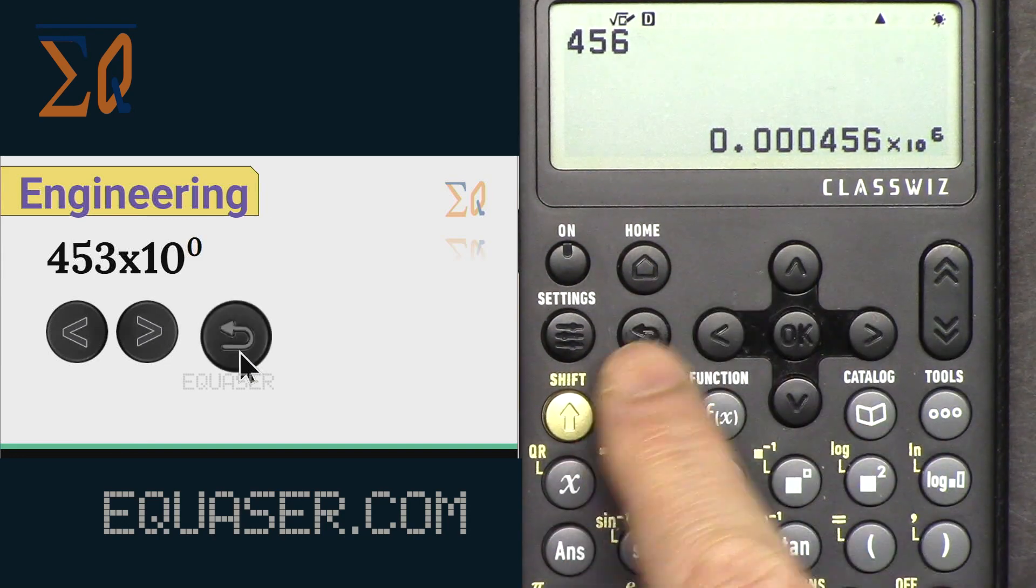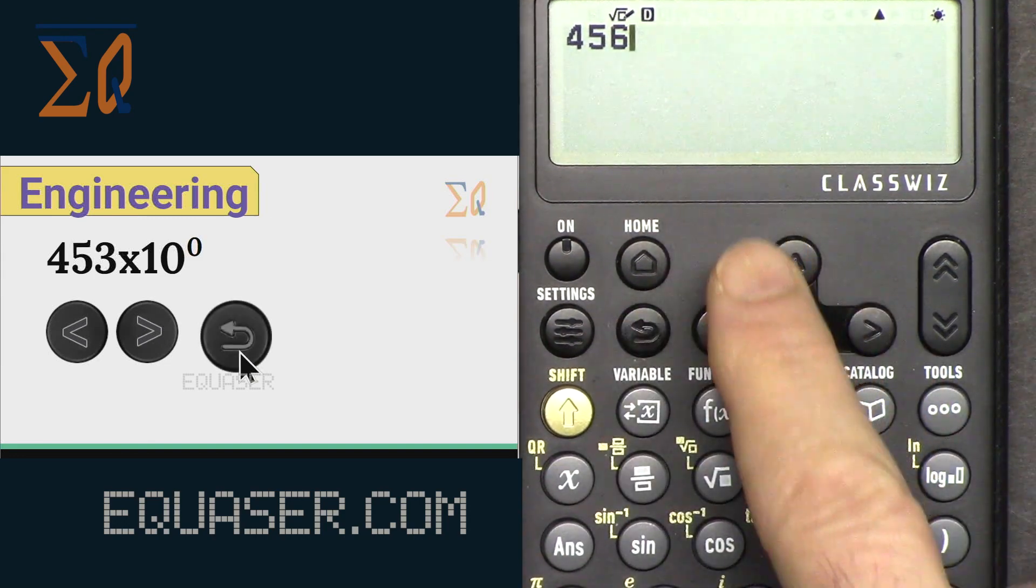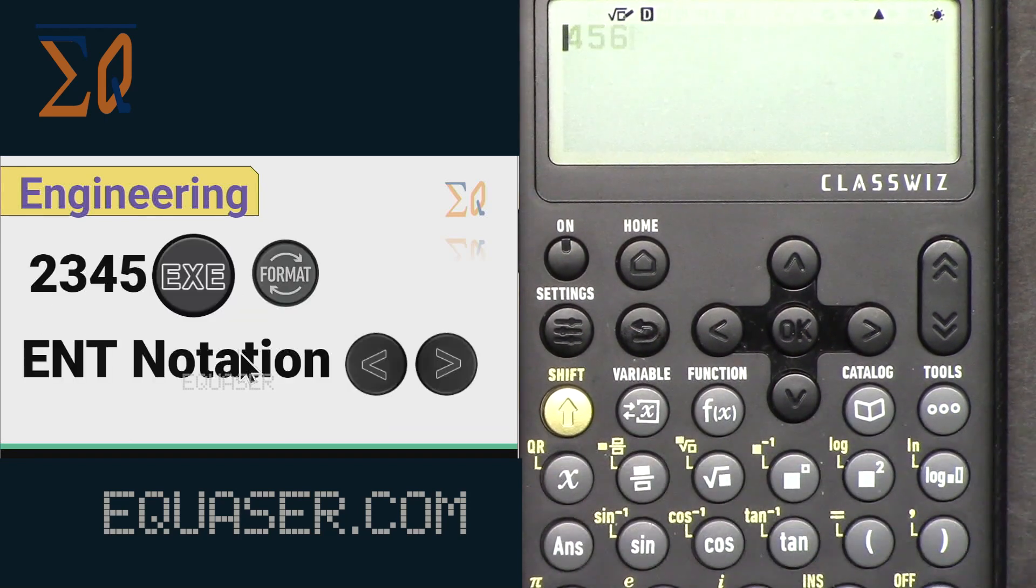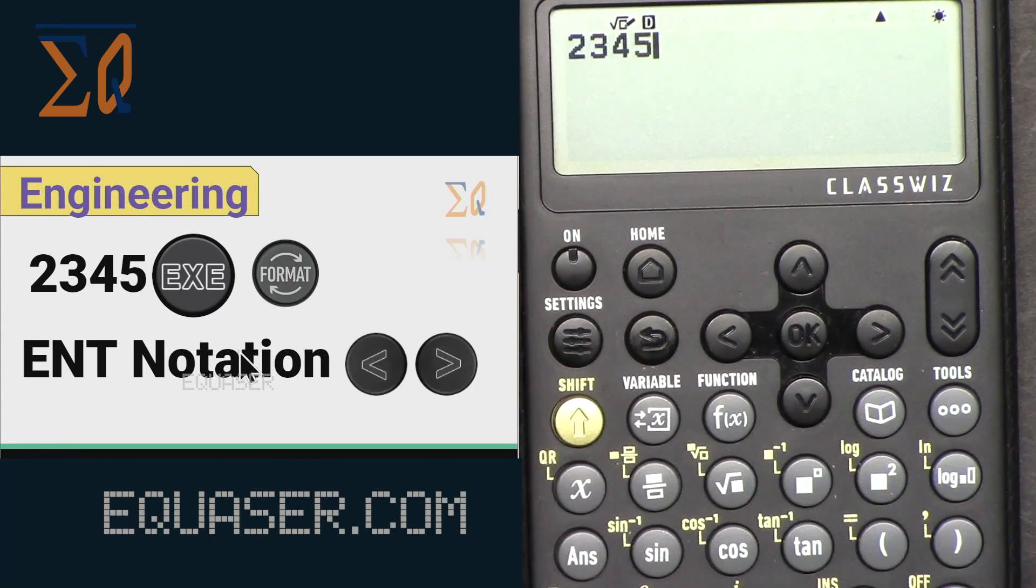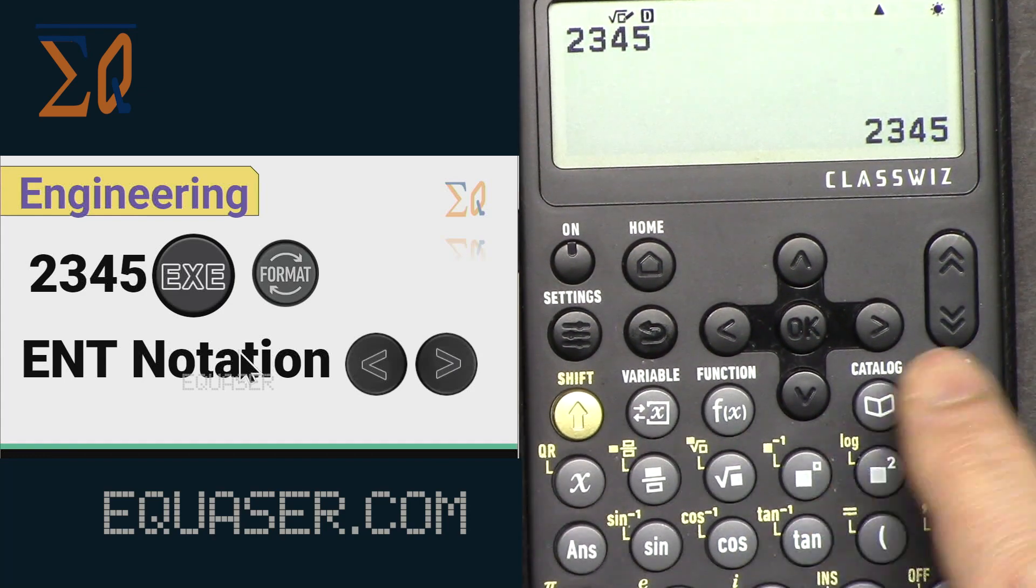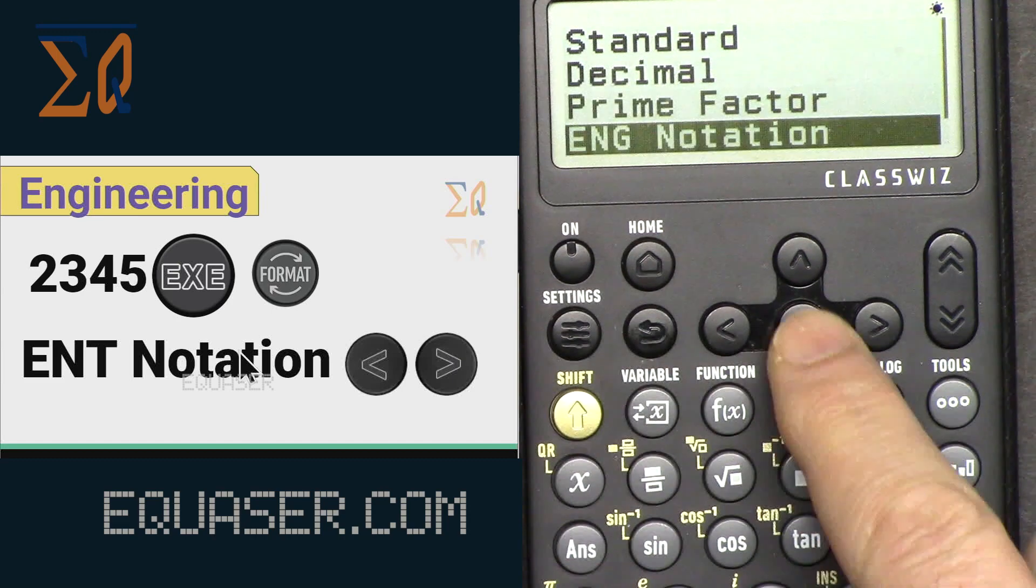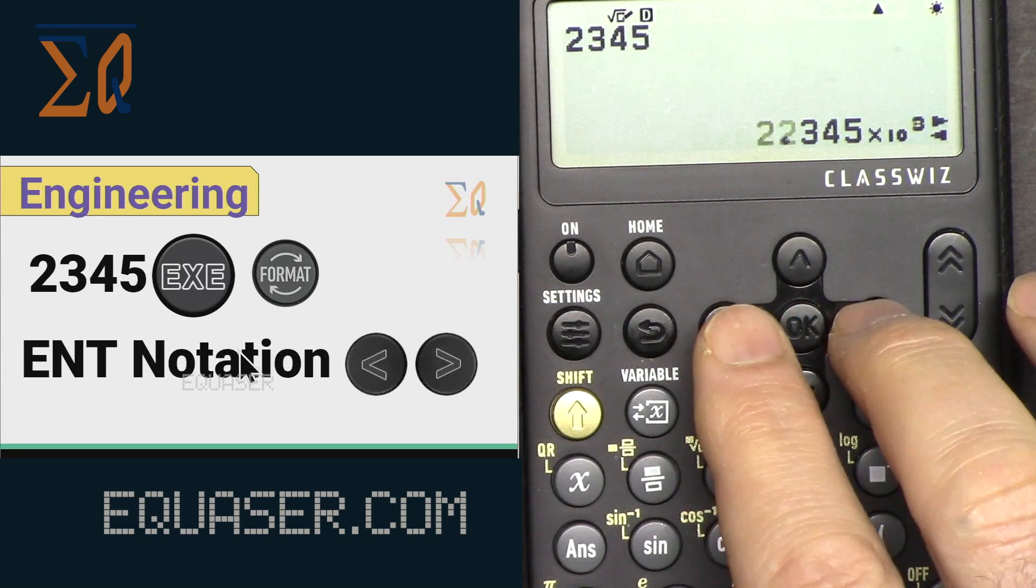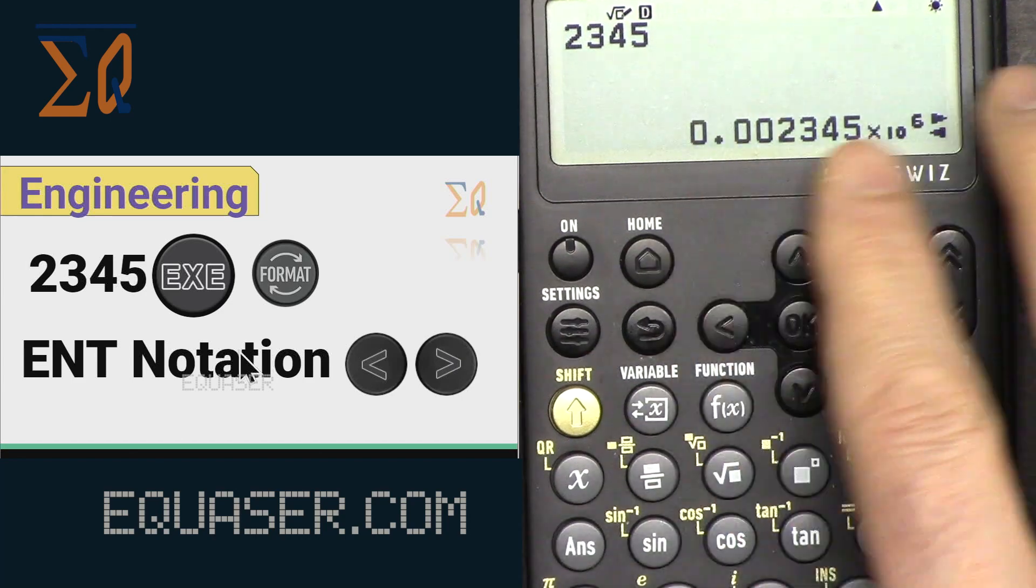The same way you can do all clear, two three four five, now four digits, and then format, engineering notation, and now you see it like that. We can change it.